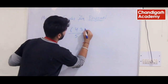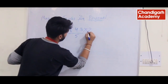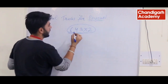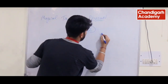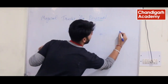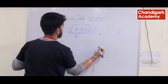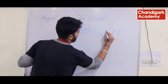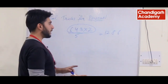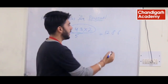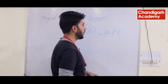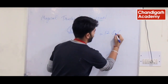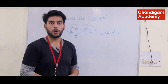First of all, you have to multiply the number by 2, which is our upper term. If you multiply it by 2, then: 2×3 is 6, 4×2 is 8, and 6×2 is 12. After that, you have to leave the last one digit and put a decimal point. So it's done.